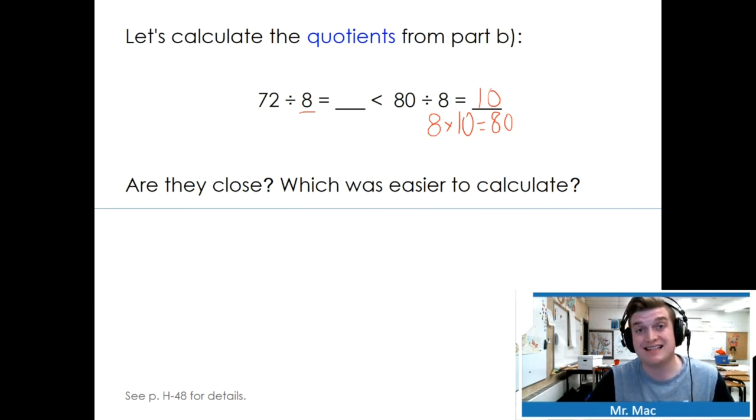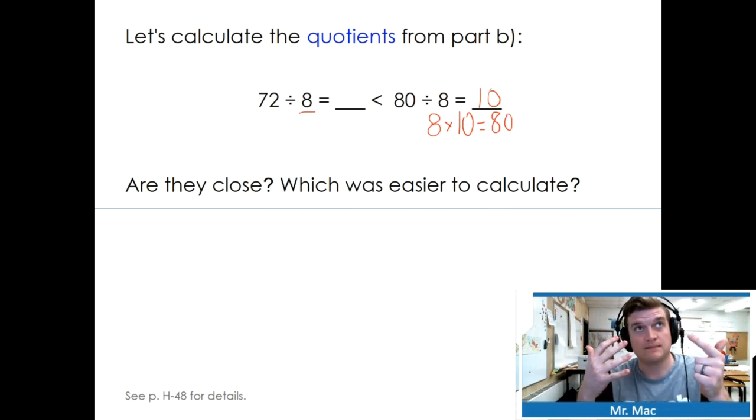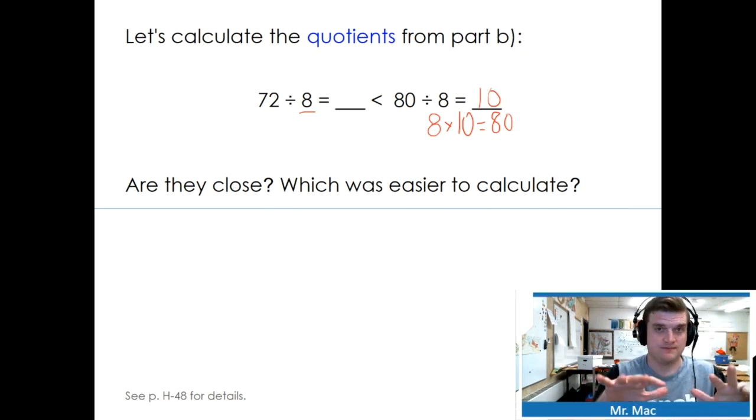72 divided by 8, we're going to need to skip count by 8s. Now there is a trick, and I'm hoping you noticed you can actually use subtraction to find the answer very quickly. But let's skip count by 8s. 8, 16, 24, 32, 40, 48, 56, 64, 72. What's my quotient? 9.